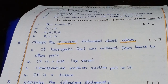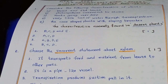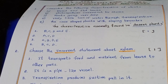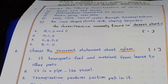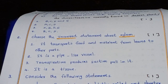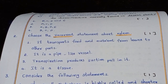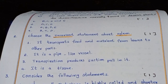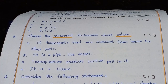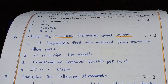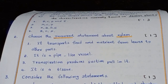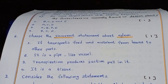Second question: Choose the incorrect statement about xylem. Option one: it transports food and nutrients from leaves to other parts. Option two: it is a pipe-like vessel. Option three: transpiration produces suction pull in it. Option four: it is a tissue. Option one is incorrect because xylem does not transport nutrients and food to other parts — that is the role of phloem.